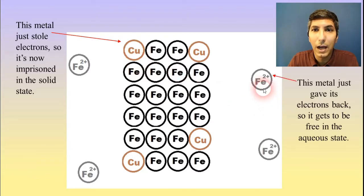Well, what happens is this metal has just stolen electrons from iron. And so because of that, it's now imprisoned in the solid state. And so it is locked up as part of that solid electrode right there. And likewise, the iron metal just gave its electrons back. So it gets to be free and swimming around in the aqueous state. And so as you can see, the copper and the iron basically just swapped states there.